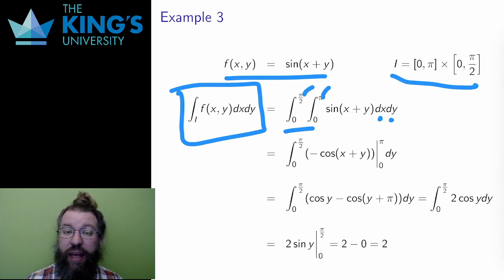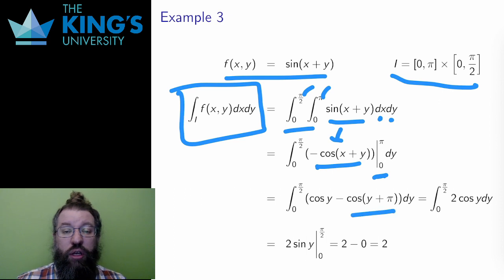The antiderivative with respect to x is negative cosine of x plus y, and I evaluate on the bounds. Here I can use a shift for the second function, realizing that cosine of y plus pi is negative cosine, and making an easier integrand for the second step for the y integral.